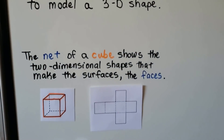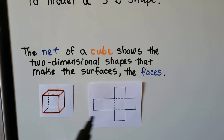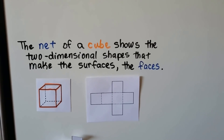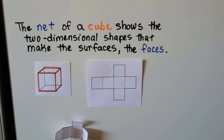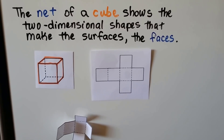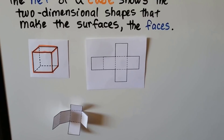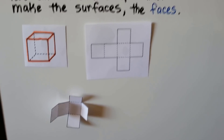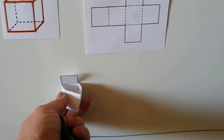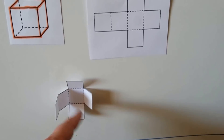You can actually go online and type in 'net of a cube' and print these out and fold them on the dotted lines. We can see all the two-dimensional shapes that make the surfaces, the faces of the cube. If we cut it out and fold it on the dotted lines, we can actually make a cube if we tape it together.